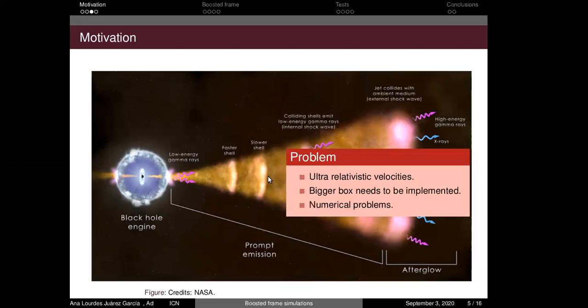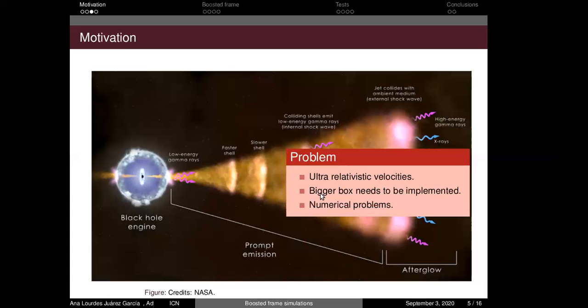Making these simulations are challenging because the internal shocks have to travel long distances, so we're going to need a bigger box for the simulation. Also, these ultra-relativistic velocities are difficult to implement because there could be numerical problems or bigger errors, such as if we have a small error in the determination of the velocity it could lead us to a very large error in the Lorentz factor.